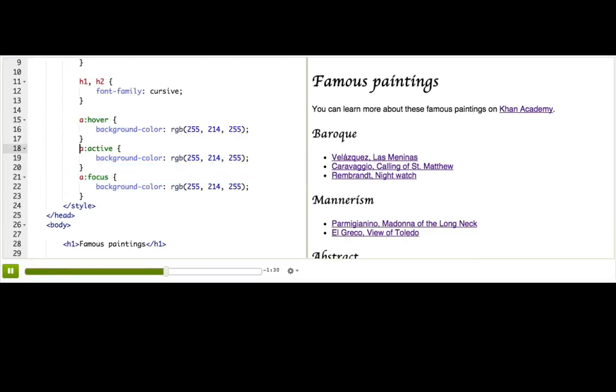What about these last two here? They're similar to hover. They depend on what the user is currently doing. The active pseudo-class selects elements that are currently being activated, like for a link, if the user is currently pressing down on the link right before they actually change pages.